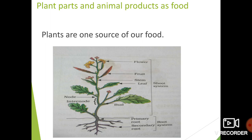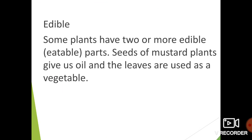Plants are one source of our food. We eat many leafy vegetables, fruits of some plants, sometimes roots, sometimes stems and even flowers. So plants have two or more edible parts. Edible means eatable.